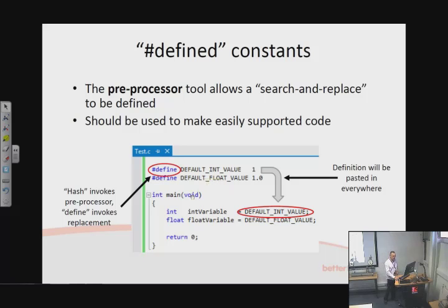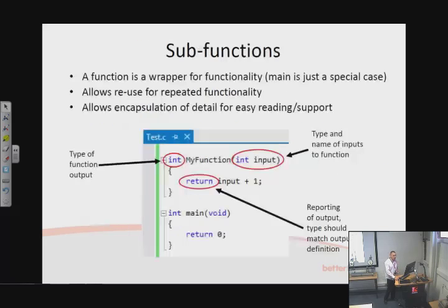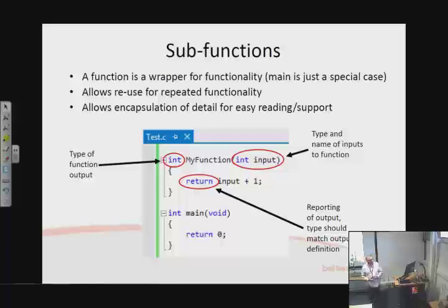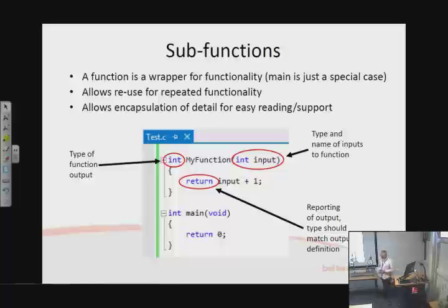The pre-processor is a very important tool — not going to talk about it in much more detail this lecture but it becomes quite significant with more sophisticated code. The next thing is sub-functions. Functions are an essential part of any programming technique, and something C does very well and very efficiently. They allow us to bundle up functionality into a little wrapper.